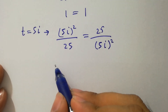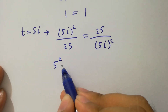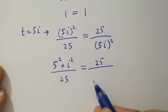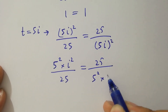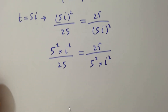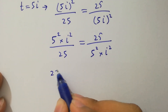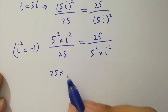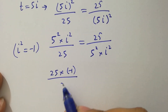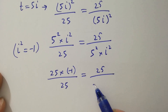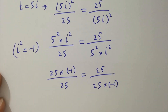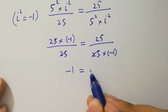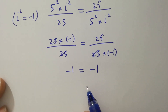For t equal to 5i: we have 5i squared over 25 equal to 25 over 5i squared. That gives 5 squared times i squared over 25 equal to 25 over 5 squared times i squared. Since i squared equals minus 1, we get minus 25 over 25 equal to 25 over minus 25, so minus 1 equals minus 1. Left hand side equals right hand side.